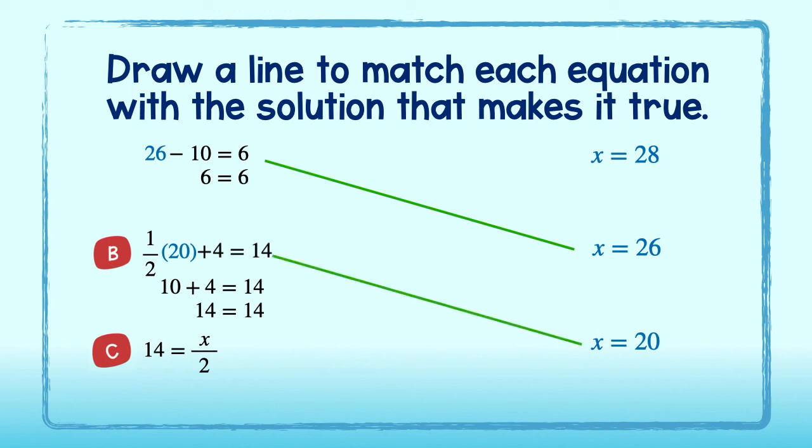That leaves 28 for part C. But let's double check just to be sure. We will replace x with 28. 28 divided by 2 is equal to 14. Since 14 is equal to 14, then 28 is the solution to part C. Great job.